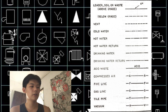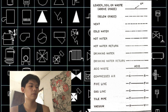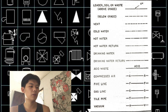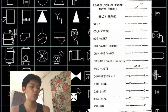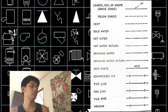As you can see here, there are different variations of lines. The first one: leader, soil or waste above grade, below grade, vent, cold water, hot water, hot water return, drinking water, drinking water return, acid waste, compressed air, fire line, gas line, tile pipe, and vacuum.